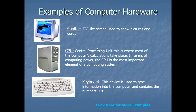Everything the computer hardware does, it does by means of software. Software is a set of instructions that performs particular operations. Computer hardware includes devices like the monitor — also called a video display unit — as well as projectors. Inside the CPU box there are different components: motherboard, hard drive, and various other circuits and chips.